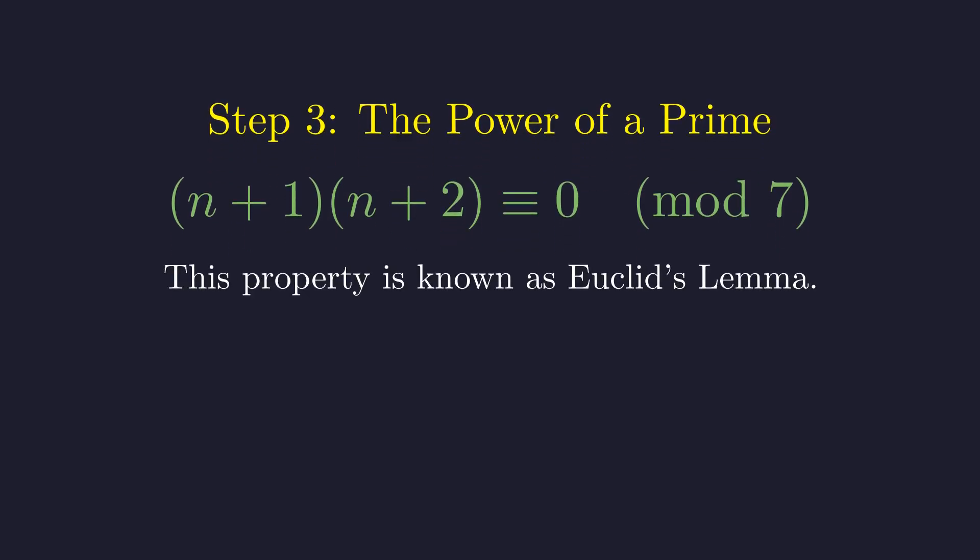Therefore, for their product to be divisible by 7, 7 must divide at least one of the factors cleanly. This property is known as Euclid's Lemma.